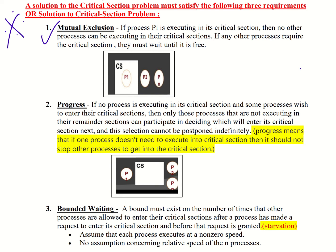Mutual exclusion means every process in the critical section — at the entry section where you request — no other processes can enter the critical section unless the process currently executing in the critical section is free.